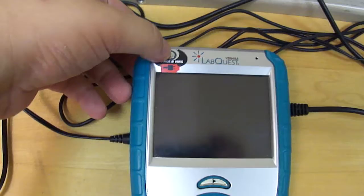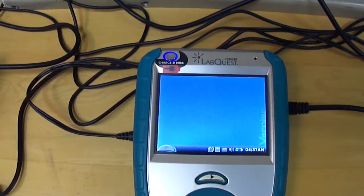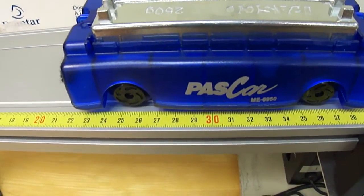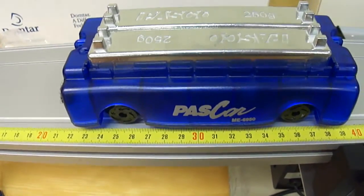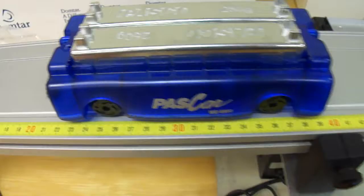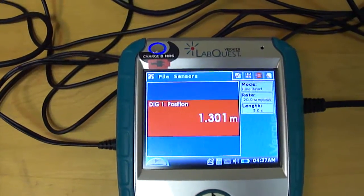So let's turn on the LabQuest. Wait for it to start up. And while we're waiting let's take a look at the cart. It's about 30-31 centimeters. So it's going to show about 1.3-1.31 meters on the Vernier. About 1.3-1. It fluctuates a little bit.